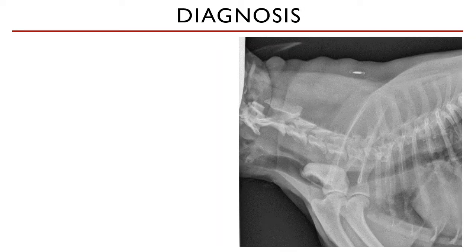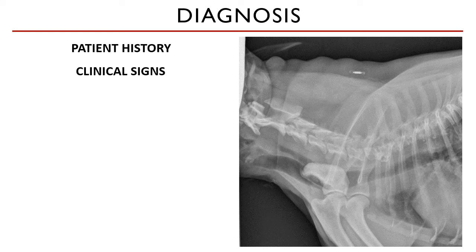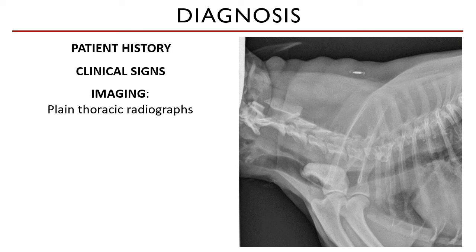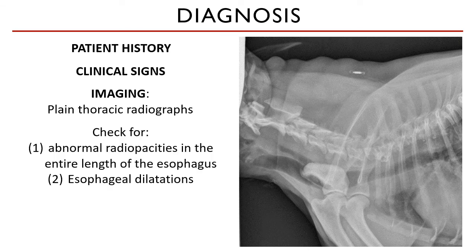The primary diagnostic tool is a radiograph, but there are other methods to consider first. Patient history can help if the owner suspects a specific food or material the animal may have eaten accidentally, or if they can distinguish vomiting from regurgitation episodes. The presence of clinical signs, even if general, can guide diagnosis. Plain thoracic radiographs are indicated to check for abnormal radiopacities along the entire esophageal length and for esophageal dilatations. Endoscopy — inserting a camera through the mouth — can also directly visualize the esophageal and stomach mucosae.